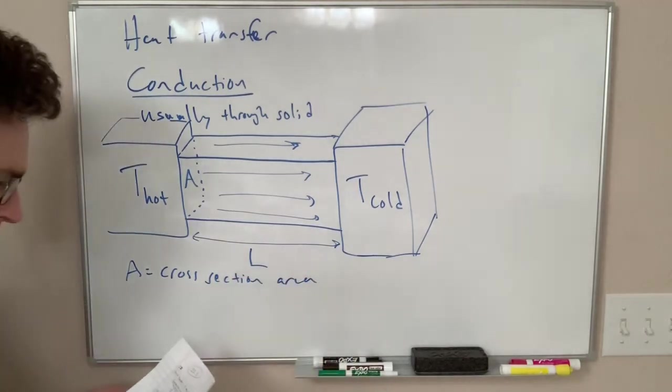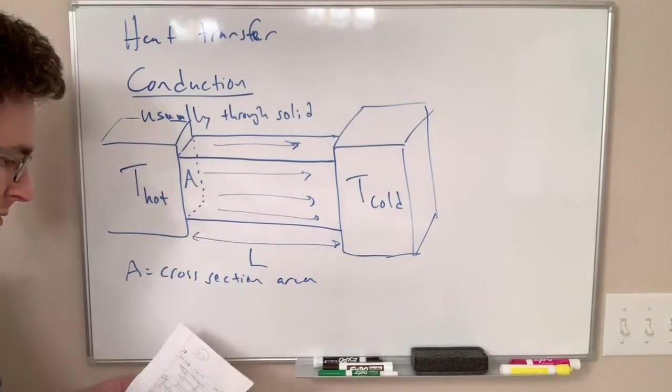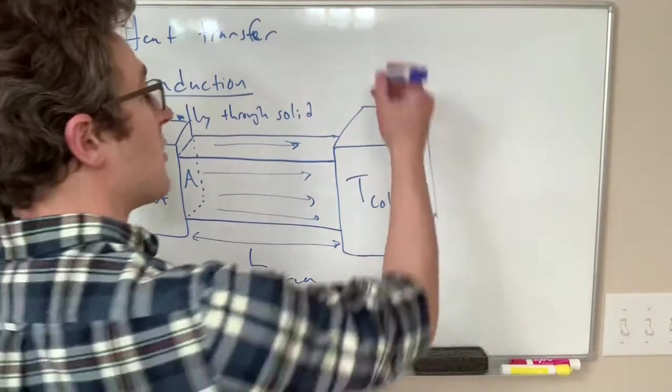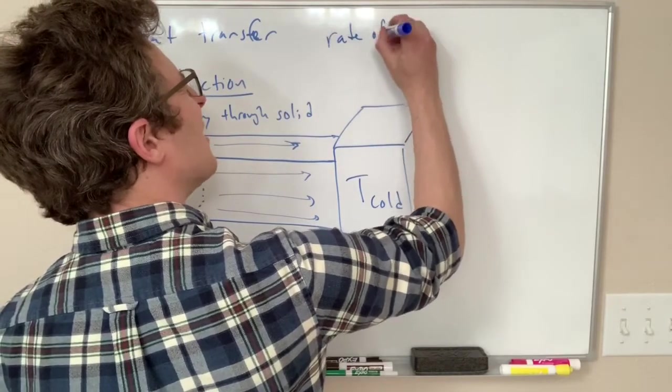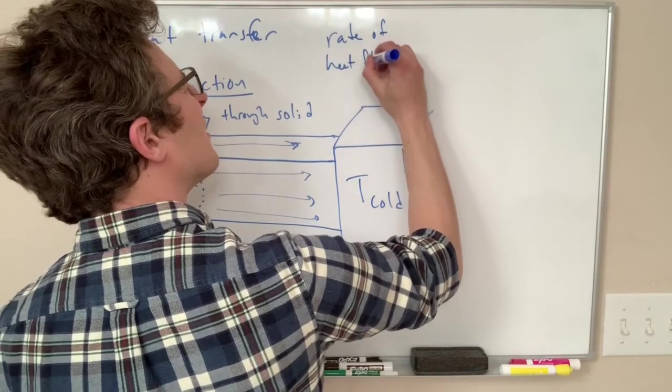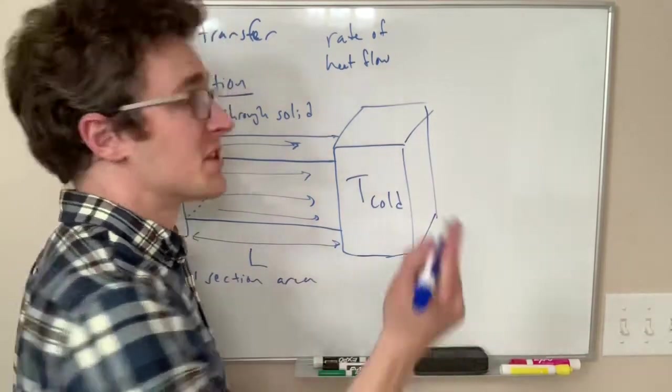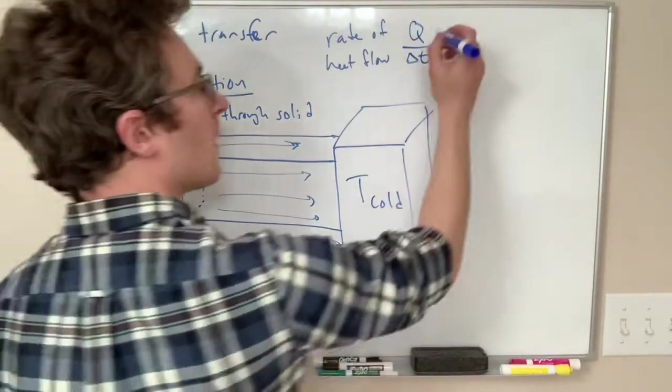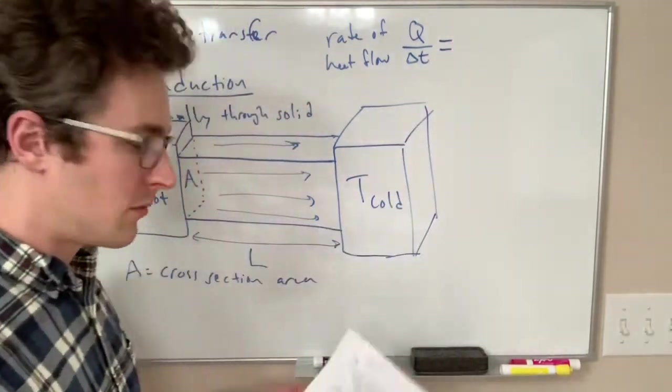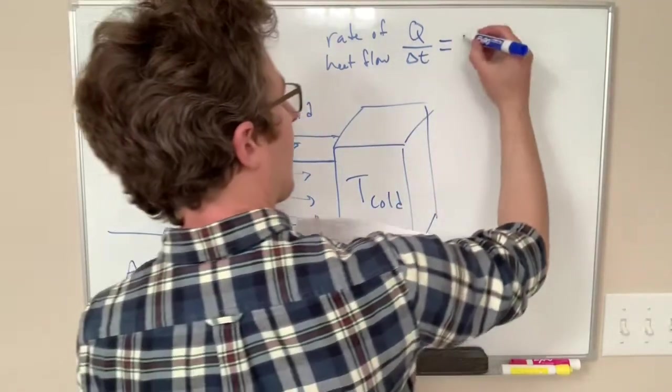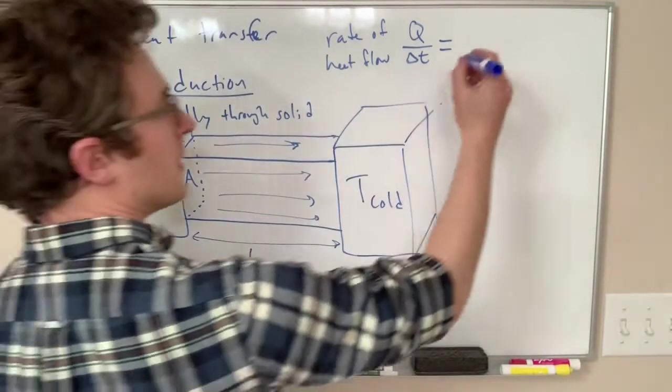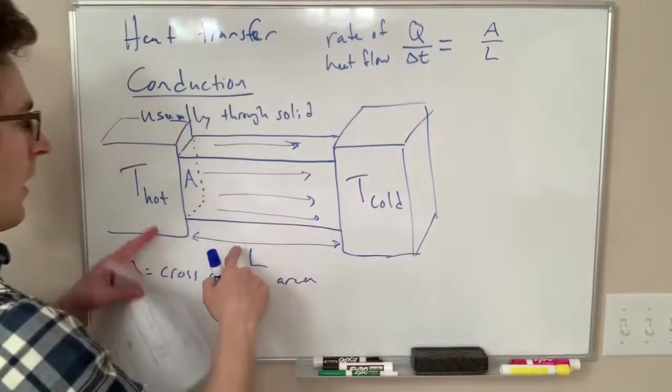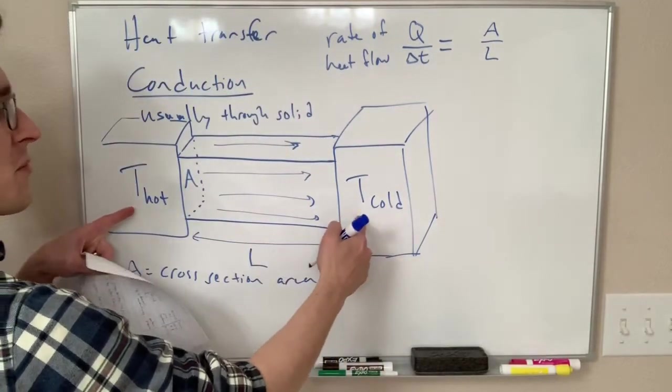Is the cross-sectional area and that's pretty much it, we're ready to write down the equation. So the equation is this: the rate of heat flow, how much energy per time, we write as Q over delta T, and that is equal to some things about the geometry, so A over L, how big this temperature difference is, delta T.